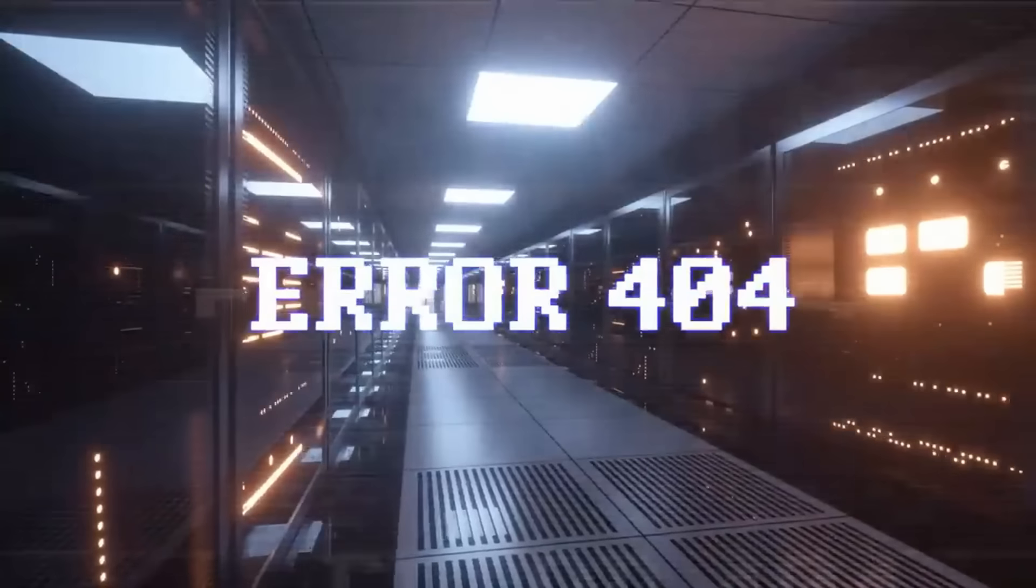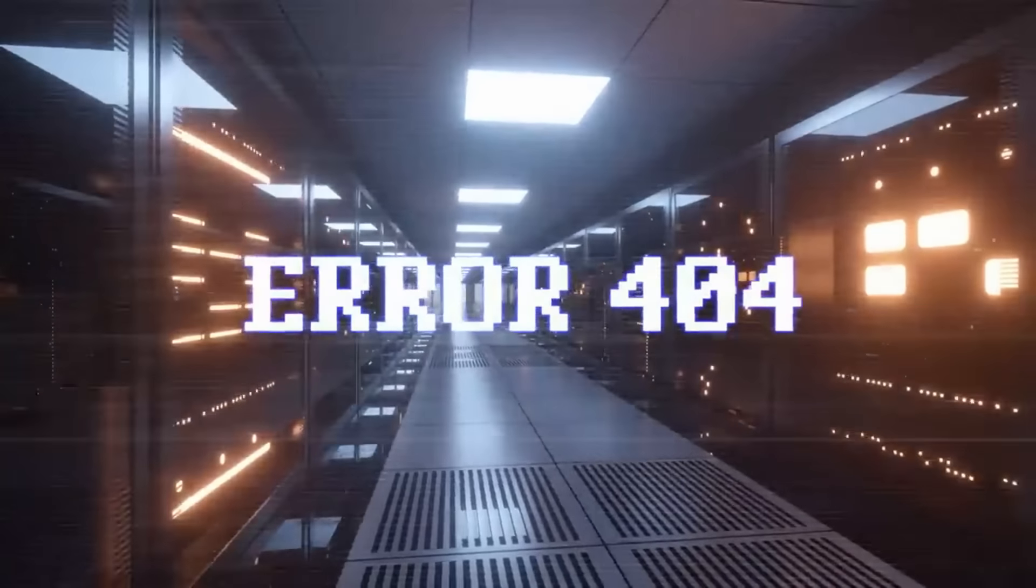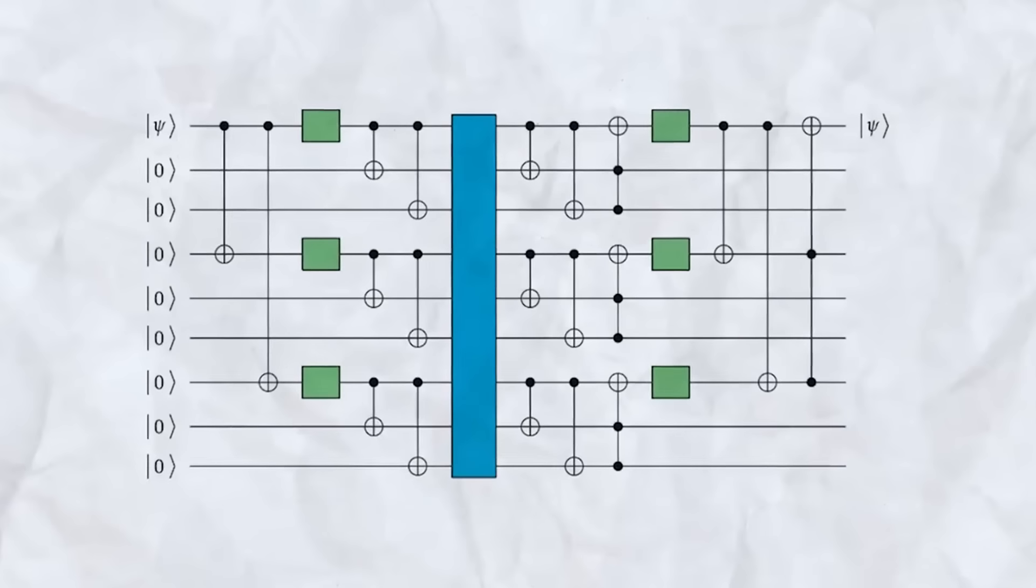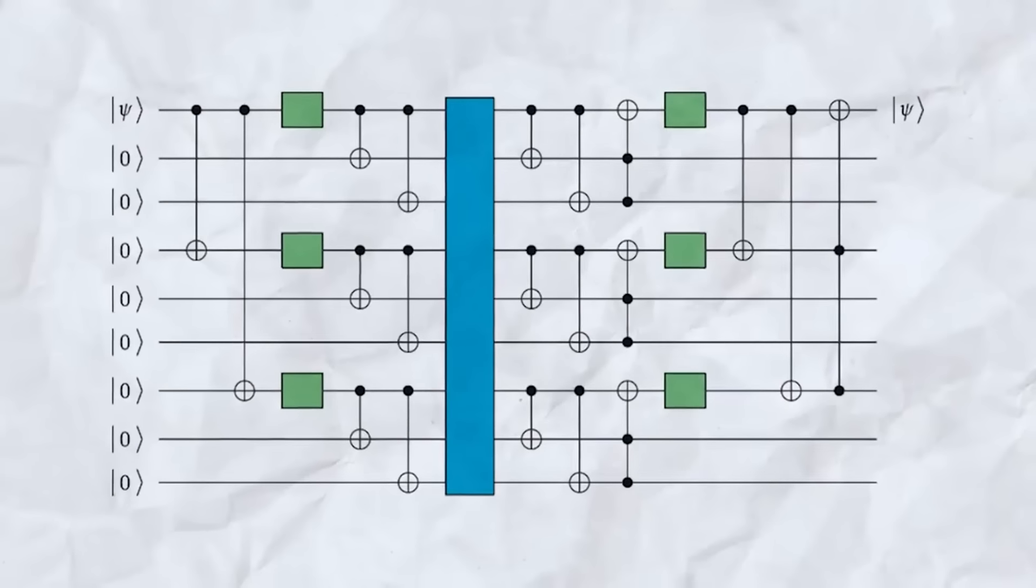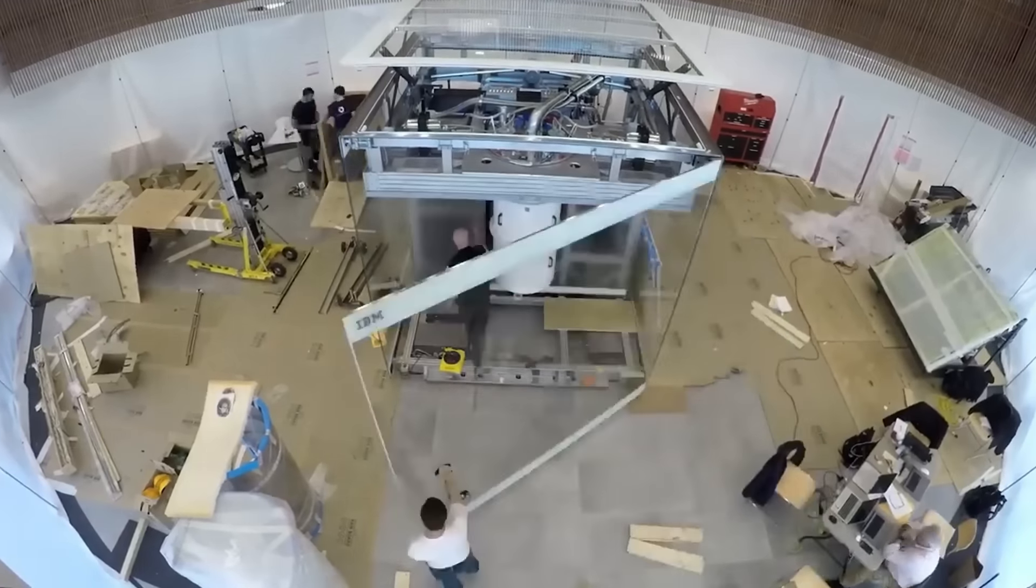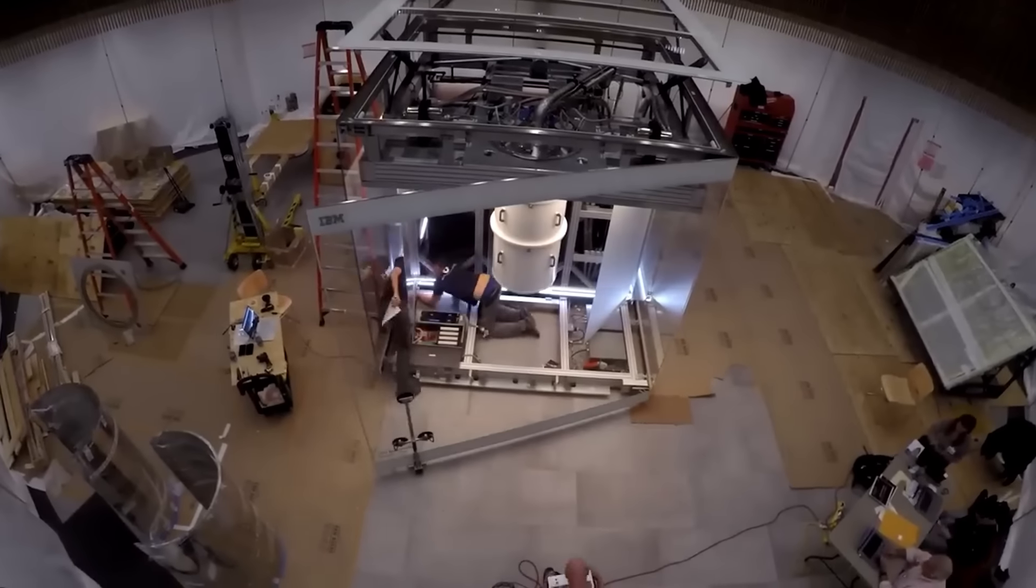There's a catch though. Quantum computers are error prone. To make them truly useful, they need a way to fix these errors. IBM is working on quantum error correction, a fancy way of saying they're figuring out how to make these machines more reliable. It's a tough nut to crack, but it's essential for building large-scale quantum computers.